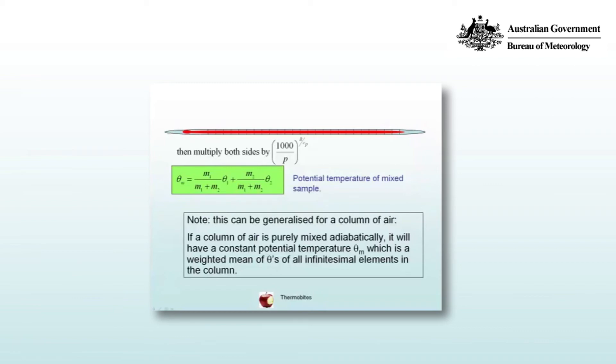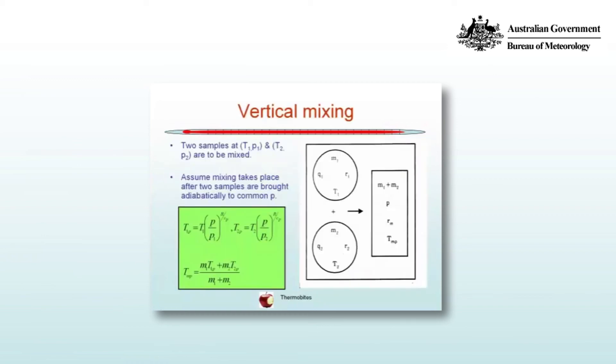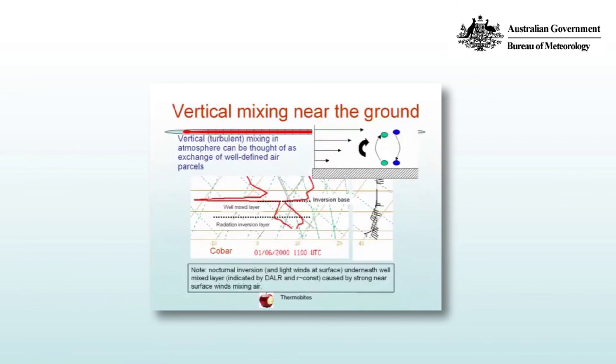And we have done this for two levels and now you can generalize that for a column of air. If the column of air is mixed purely adiabatically it will have a constant potential temperature θm which is a weighted mean of the θs of all the infinitesimal elements in the column, which is precisely what we saw in the previous slides, that the temperature lapse rate is now the result of mixing parcels right through the depth conserving the value of potential temperature.